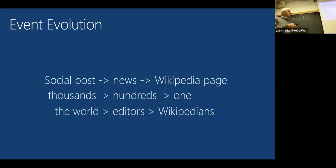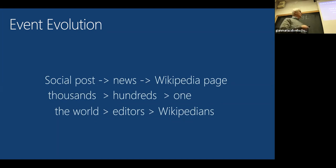This pattern applies to every major event. Social posts number in the thousands, then hundreds of news articles, then one Wikipedia page. Another way of reading this transition: you have the planet, then a few editors, then even fewer Wikipedians—the people who write the Wikipedia page. You can already see the potential for biases and filtering, where a lot of information gets cut out.